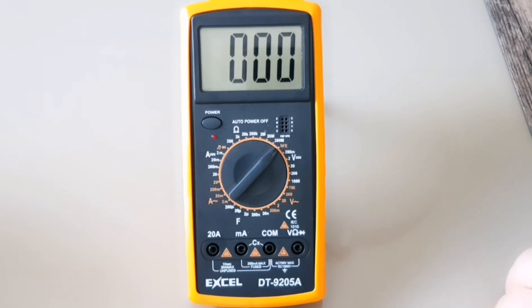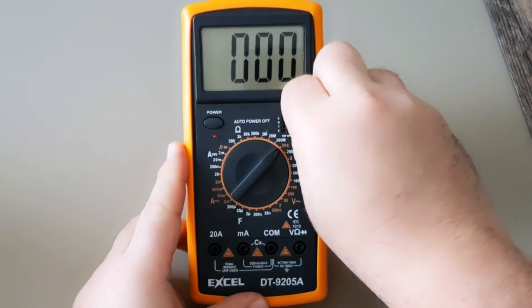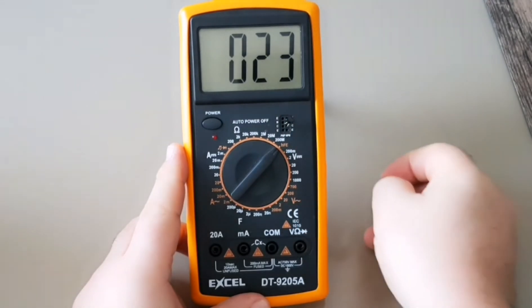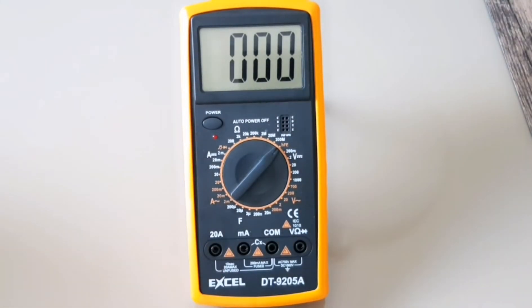Alrighty. So, one thing, last thing to test, actually, it has a little built-in transistor checker. NPN or PNP. And there you go. So, emitter-based collector. I don't know, this function some people don't like. I think on a cheap multimeter, why not? Added feature. Can't hurt.